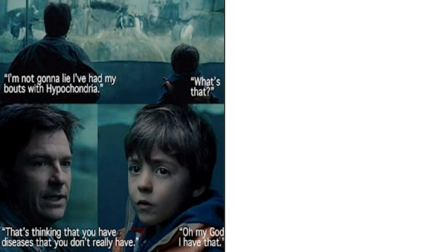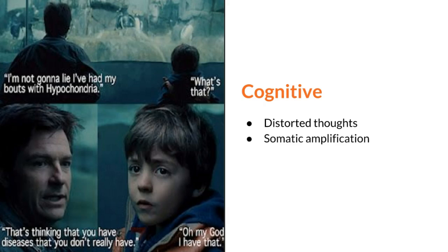The third specific cause is related to cognitive theories. It is possible that distorted thoughts may be a factor in the development of these disorders. For example, somatic amplification is the tendency to perceive bodily sensations as intense, noxious, and disturbing. Some people may have heightened sensitivity to physical processes and are thus more prone to notice and negatively interpret these sensations. Additionally, inaccurate beliefs about illness and bodily symptoms may contribute to the start of these disorders. In the film The Switch, the young boy is an example of having inaccurate knowledge and beliefs about illness that appears to result in illness anxiety disorder.